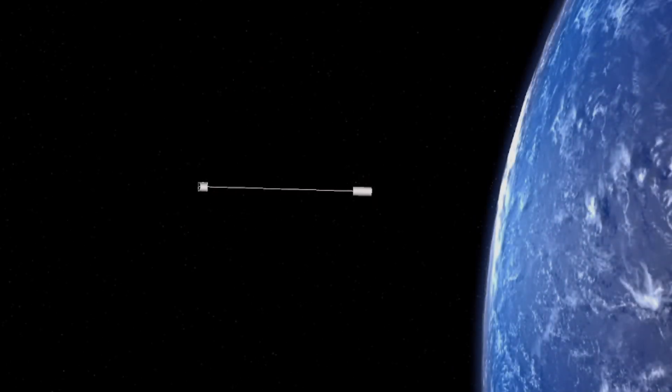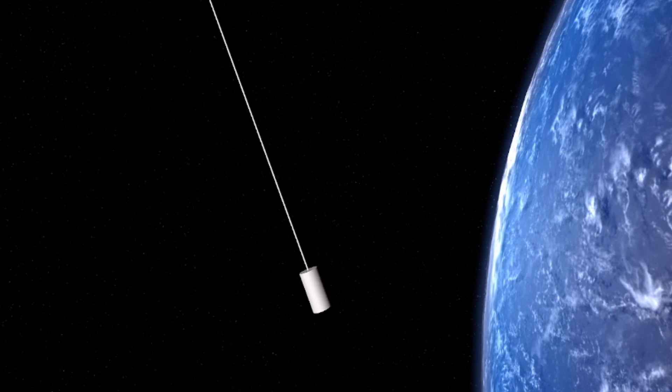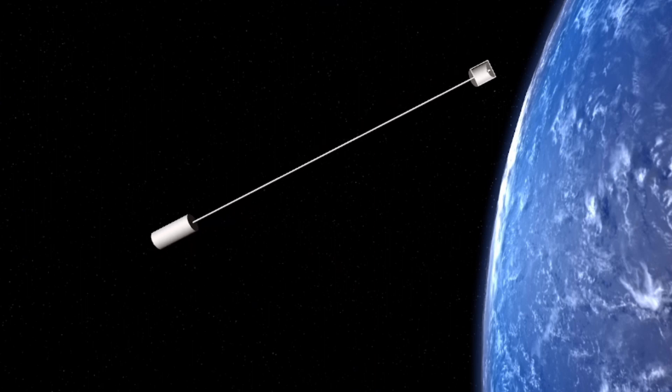Tether Gravity. Tether Gravity, or barbell gravity, is functionally the same as wheel spin gravity. The difference being there is no wheel; instead, the crew section is attached to a counterweight and spun along the center of mass.